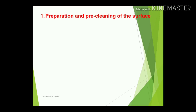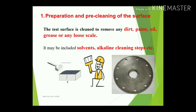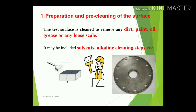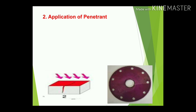The first step in dye penetration testing is preparation and pre-cleaning of the surface using the cleaner from the DPT kit. The test surface is cleaned to remove any dirt, paint, oil, grease, or loose scale. This may include solvents and alkaline cleaning steps. With the application of a brush, you clean your surface to help identify irregularities on the top surface of the material.